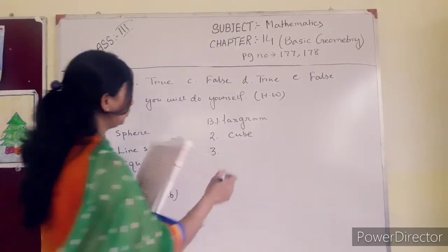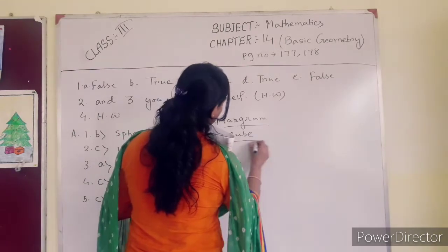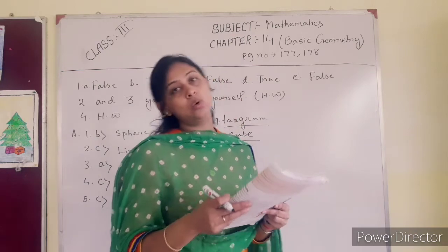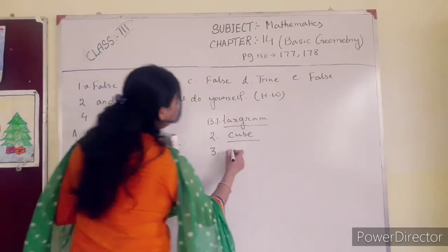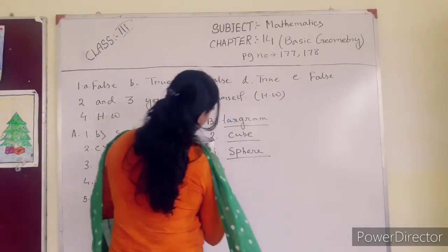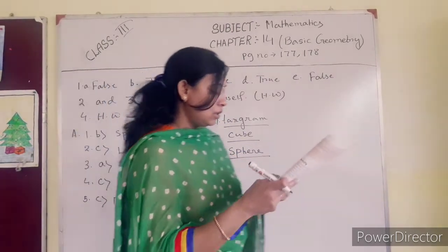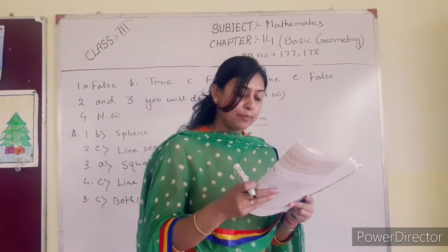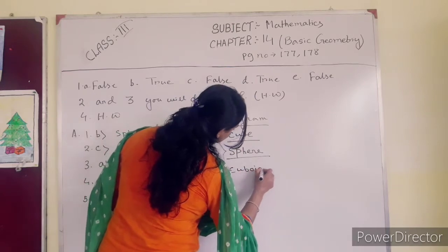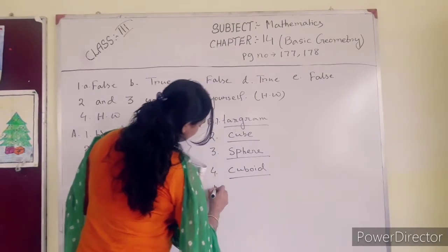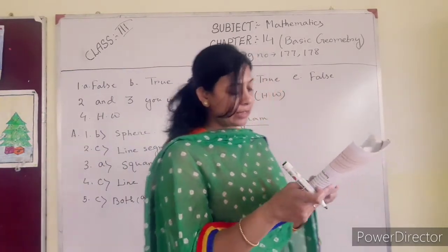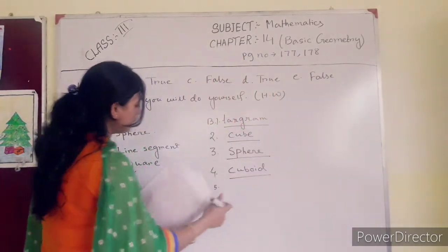Number 3: a sphere has only one curved face, no edge and no corner — so the answer is sphere. Number 4: a matchbox is an example of a cuboid. Number 5: a cylinder has two circular faces that meet — so the answer is 2.